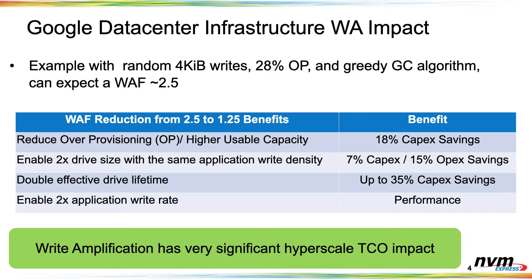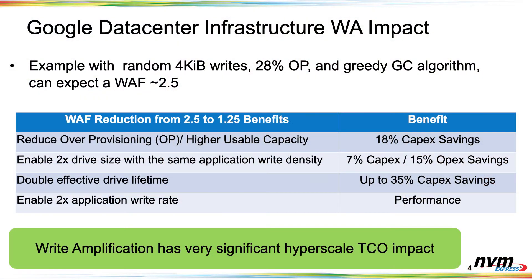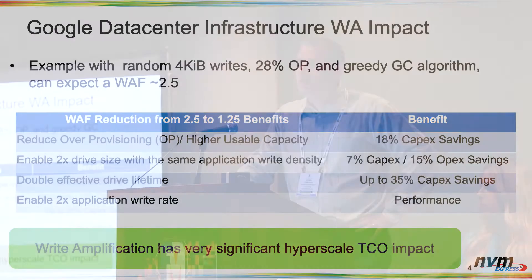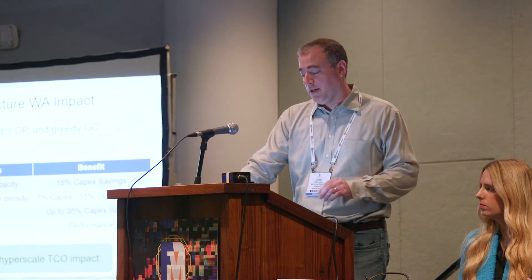You could enable 2x the drive size with the same write density from the application — hitting higher performance while deploying a larger drive, which comes with its own savings. A larger drive is more efficient at the same performance in terms of power and cost. You could double the effective drive lifetime, saving capex from early wear-out replacements, or enable 2x the write rate for your application. The summary is that write amplification has a potentially very significant impact to hyperscalers in terms of the bottom line.